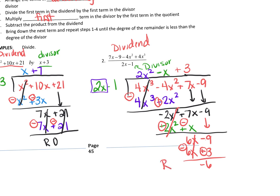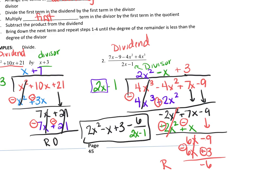So the quotient here is 2x squared minus x plus 3. Here's how we write the remainder: it's minus 6 over the divisor, which is 2x minus 1. You always write the remainder — whatever the sign — over the divisor. So here is the final quotient: 2x squared minus x plus 3, minus 6 over (2x minus 1).